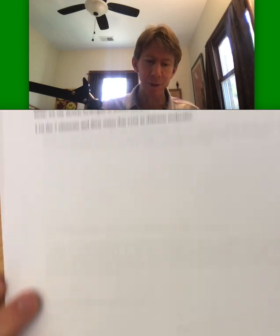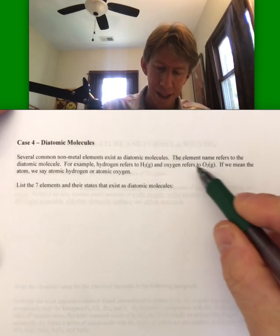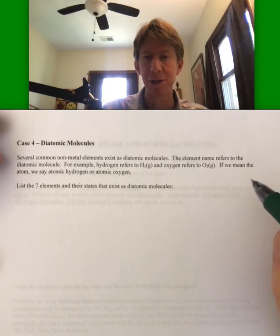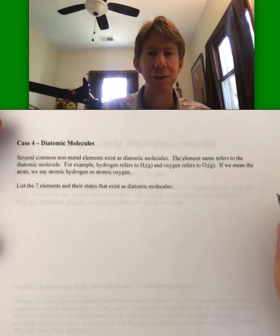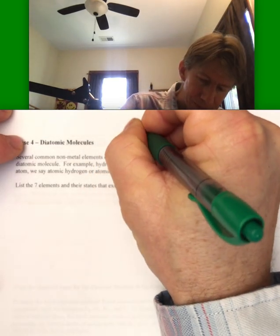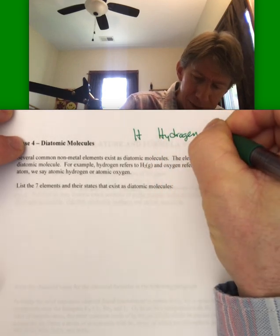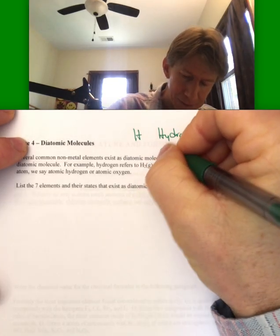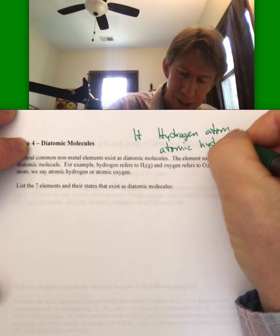Last case we want to talk about are the diatomic molecules. The seven diatomic elements we have also called them. The element name refers to the diatomic molecule. For example, hydrogen refers to H2. If you wanted to say hydrogen just H, you would say hydrogen atom or atomic hydrogen, which does happen. We do see that from time to time.